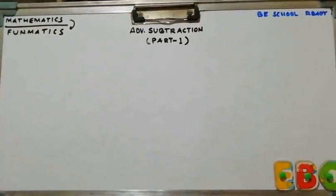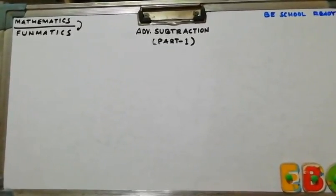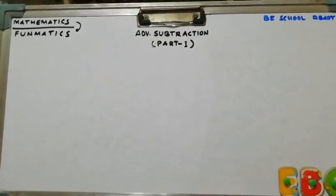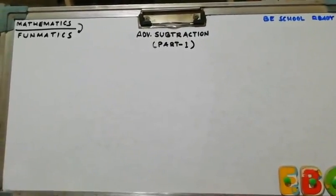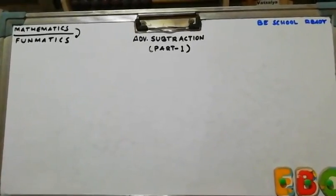Welcome to the Early Birds Classes B School Ready. In this phonematic section, we are going to learn advanced subtraction. This is part 1. We are going to learn subtraction of two-digit numbers. So let's take an example.